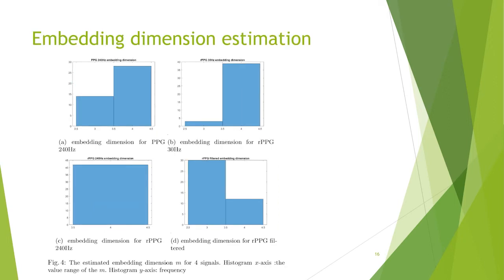This is the estimated embedding dimension m for the four signals. The embedding dimension for all signals is either 3 or 4. RPG 240 Hz, RPG 30 Hz, and PPG 240 Hz have the majority of signals from 42 subjects at embedding dimension 4. After bandpass filtering by continuous wavelet transformation, RPG-filtered has a majority at embedding dimension 3, showing that post-processing by bandpass filtering reduces the complexity of the signal.